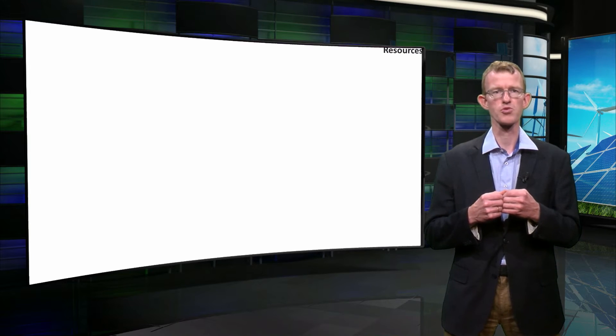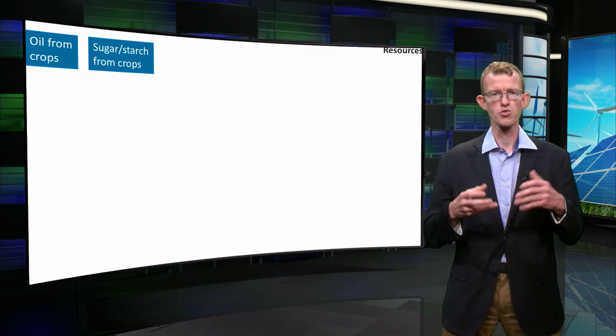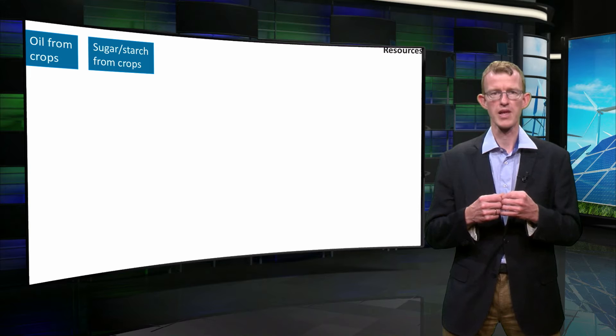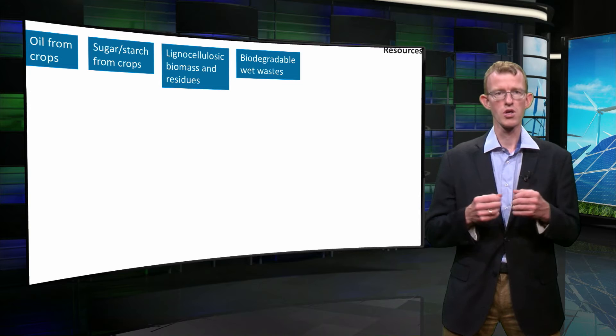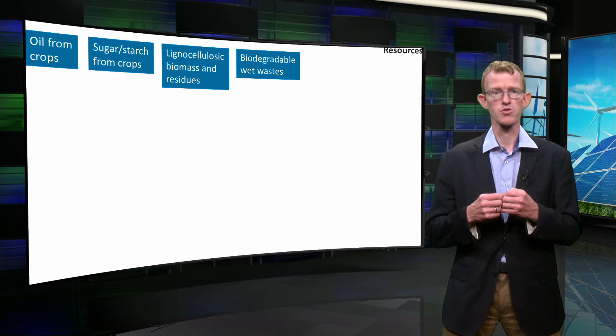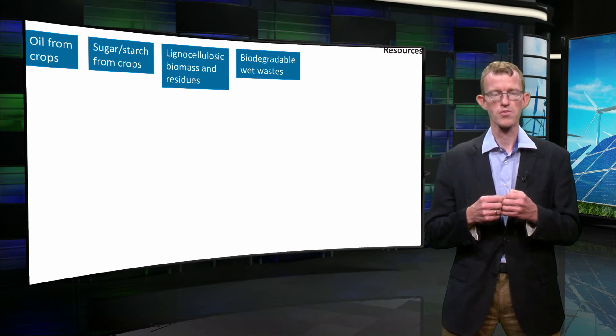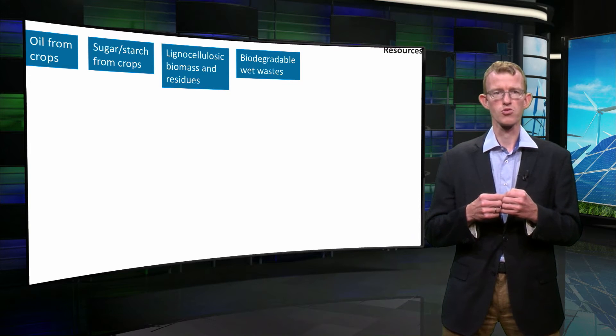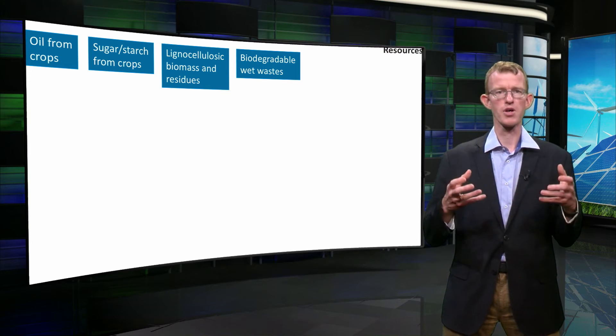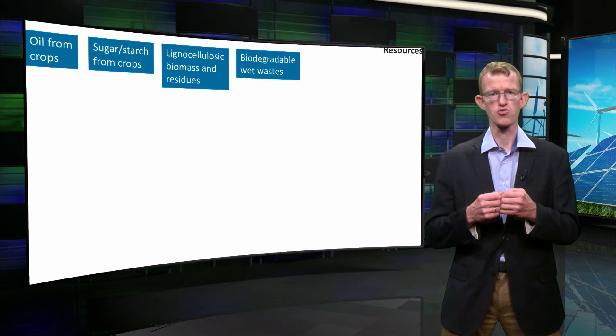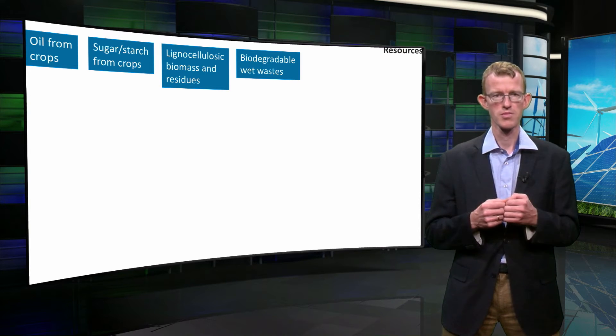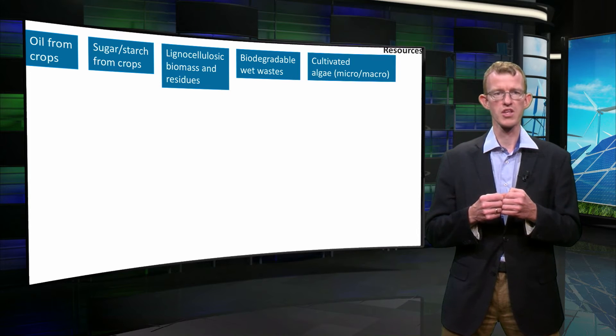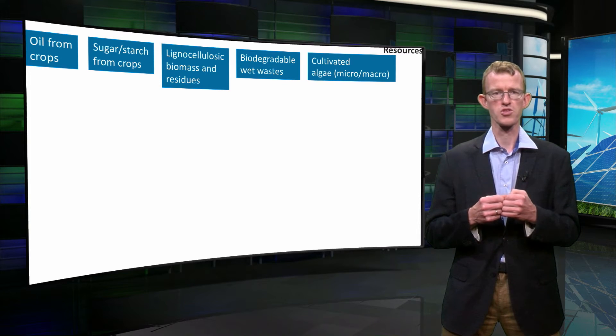Let's first have a short look at the sources. This can be first, second, or third generation. Examples of first generation biomass are oil, sugar, or starch from crops—the edible elements from plants. Second generation are parts from plants that are not edible, such as lignocellulosic biomass and residues. Also, biodegradable wet wastes belong to this category. Think of the organic part of waste from households and manure, the droppings from animals from farms. Then finally we have algae, which are normally given their own category. They are called third generation biomass.